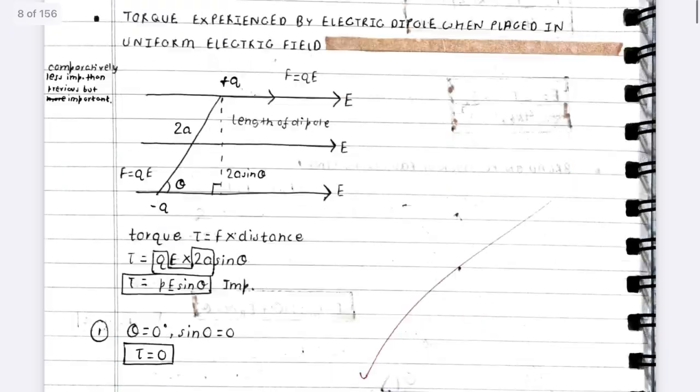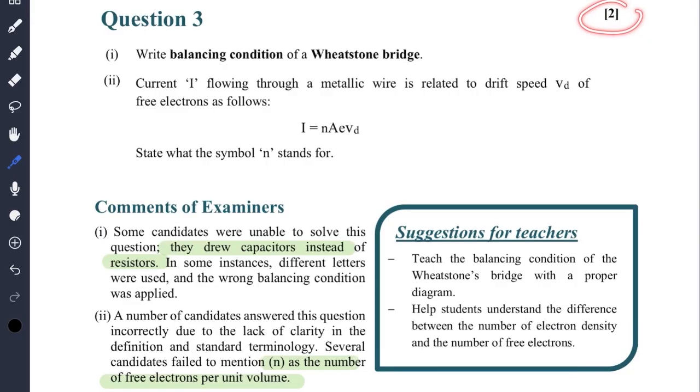Write the balancing condition of a Wheatstone bridge. Some candidates were unable to solve this question - they drew capacitors instead of resistors. In some instances different letters were used and wrong balancing conditions were applied. Make sure to do Wheatstone bridge, meter bridge and all of this. One question is definitely asked every year.